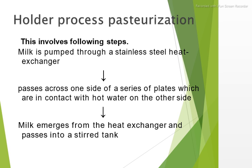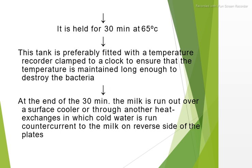In the LTLT process, milk is pumped through a stainless steel heat exchanger, passing across one side of a series of plates that are in contact with hot water on the other side. The milk then emerges from the heat exchanger and passes into a stirred tank, where it is held for 30 minutes at 65 degrees Celsius.